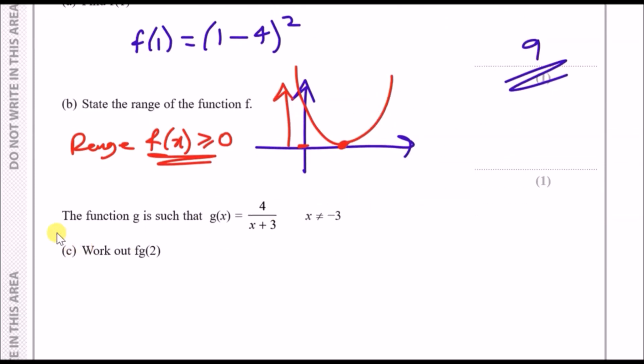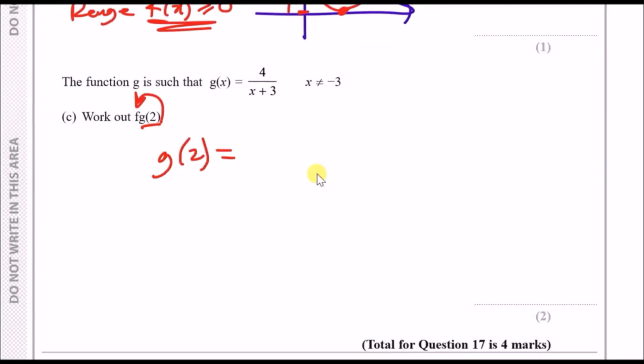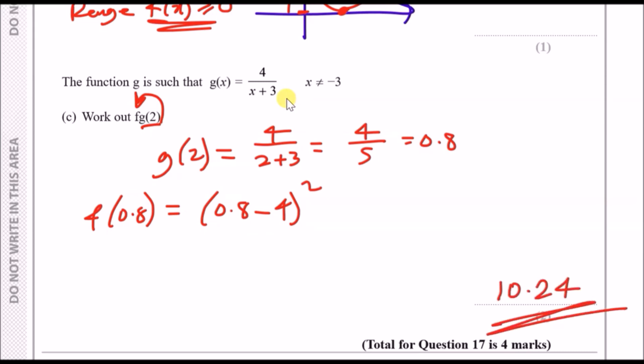Lastly, the function g is such that g(x) equals 4 over (x plus 3). Work out f(g(2)). What this means is you have a function g and it goes inside f. The second layer goes inside the first. Find g(2) first. g(2) just means replace the x with 2, so 4 over (2 plus 3) is 4 fifths, which is 0.8. Now put this 0.8 into f(x). f(0.8) is going to be (0.8 minus 4) squared, and this gives us a result of 10.24.